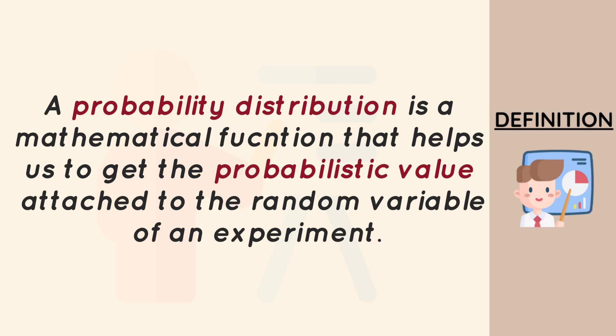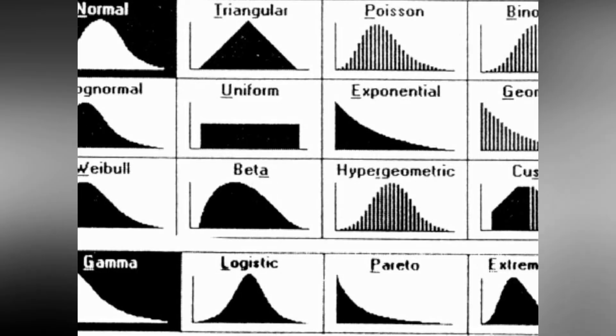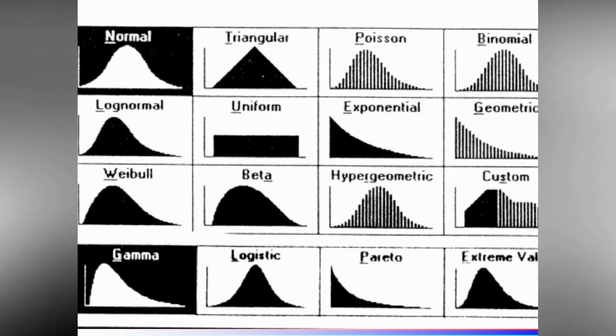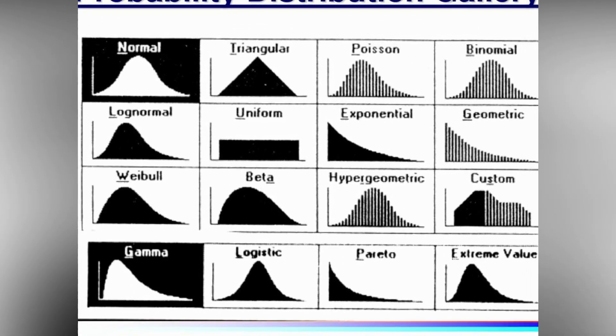We can graph this by placing the value of each random variable on the x-axis and the probabilistic value on the y-axis. When we plot this on a graph we get different shapes of lines or curves — that is the idea of a probabilistic distribution. For different experiments we have different graphs that define them, and the random variables produce the type of probability distribution we have.